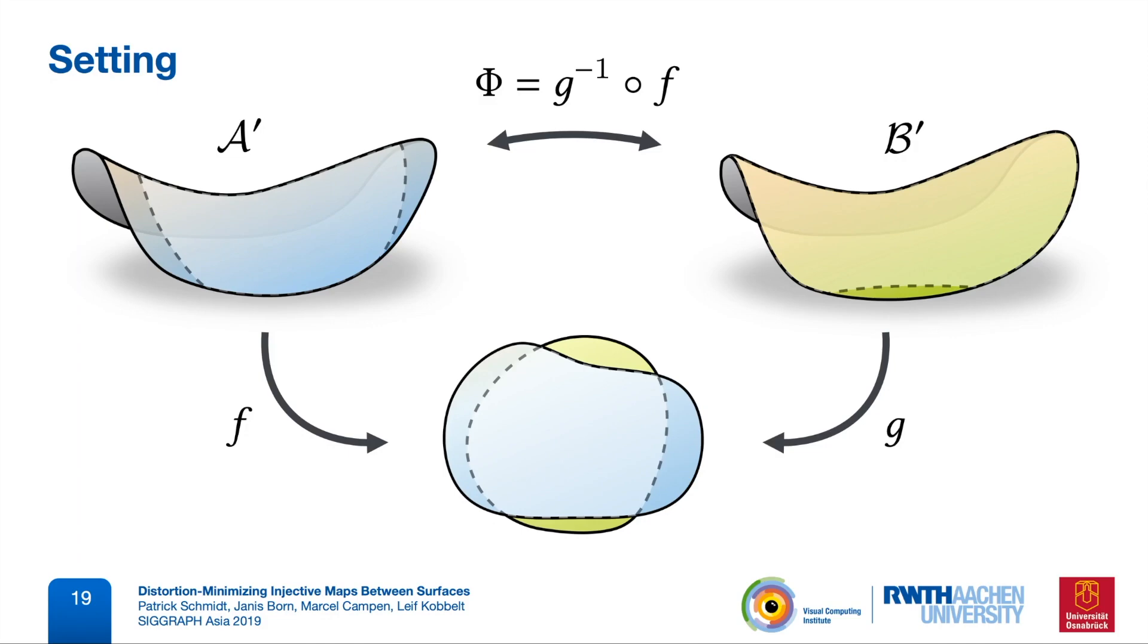In our optimization, we're now going to modify both individual maps, F and G, into the plane, such that the quality of the composed map phi improves.